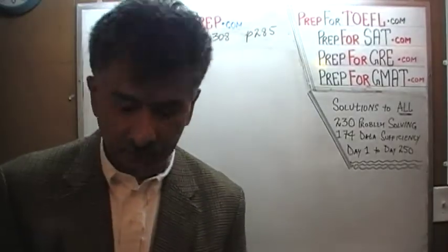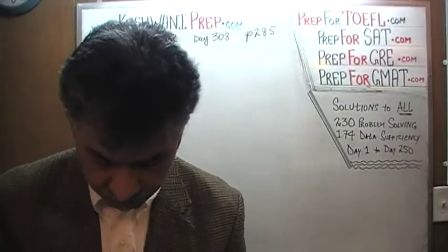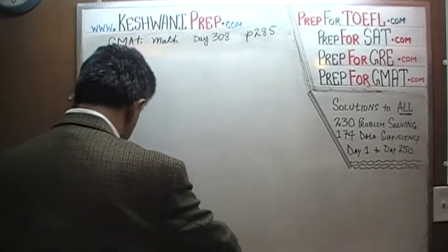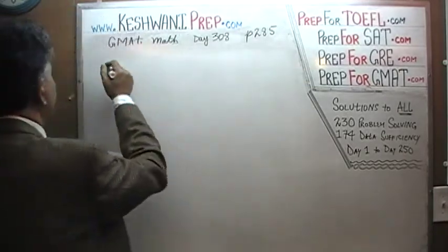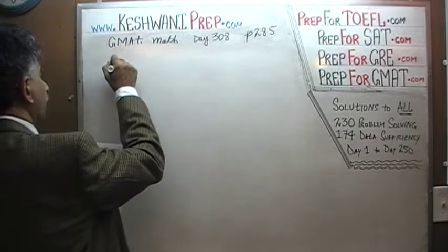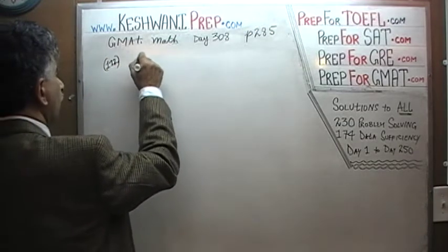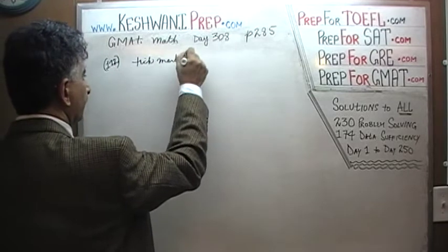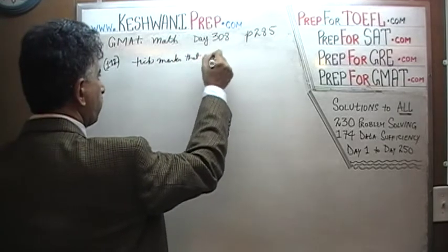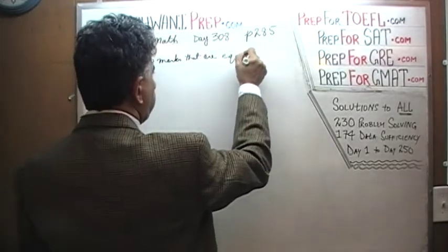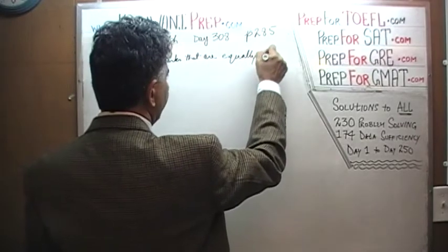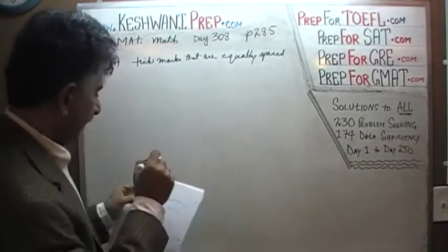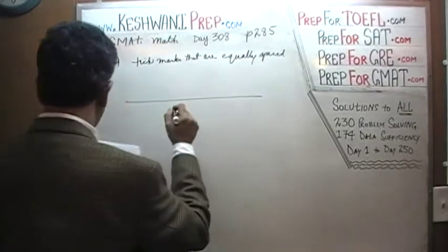Please turn to page number 285, the very first problem on the page, number 112. In problem 112, we are told that we have tick marks that are equally spaced, which is very important information. And then it looks something like this.